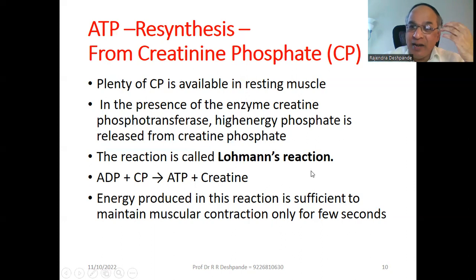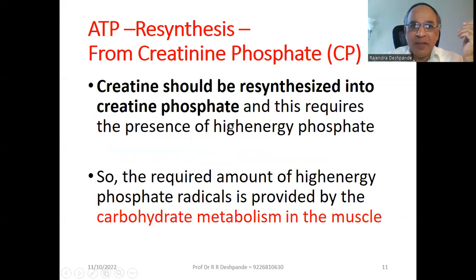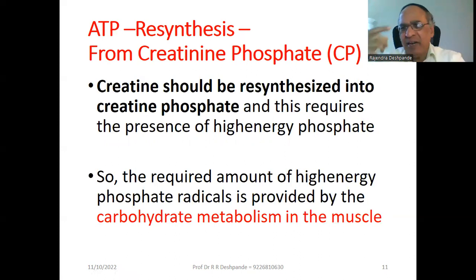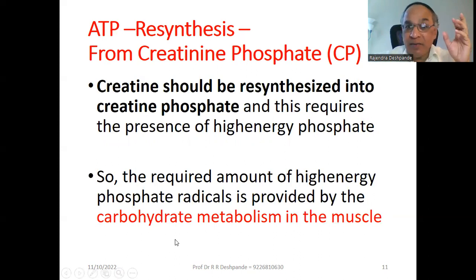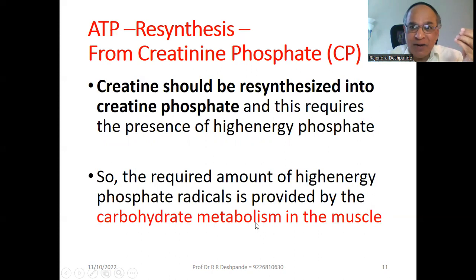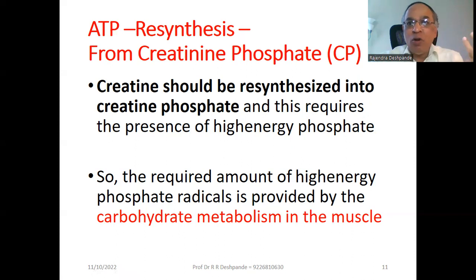Creatine must then be resynthesized back into creatine phosphate, which again requires high-energy phosphate. The cycle goes: breaking, generating, breaking, generating — from the same degraded molecules you return to the original. The required high-energy phosphate radical for this resynthesis is provided by carbohydrate metabolism, another metabolic process that helps when creatine phosphate supply is insufficient.